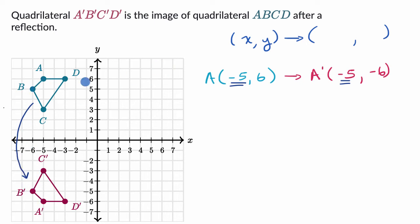So my candidate for this transformation, for the rule here is that X stays the same, and that Y becomes the opposite. But we could do that with a few more points just to make sure that that holds up.